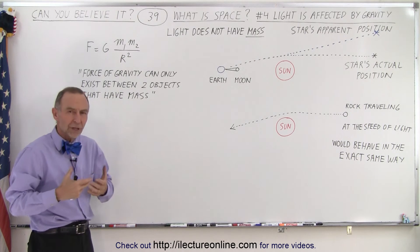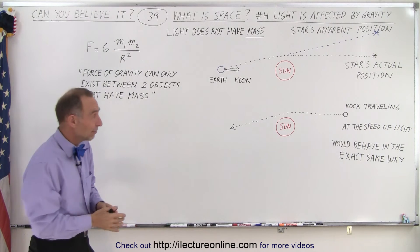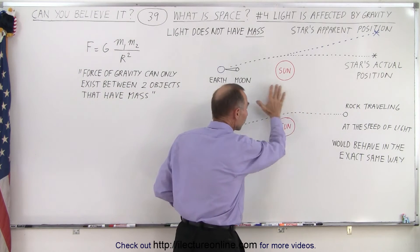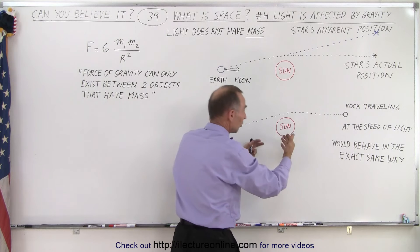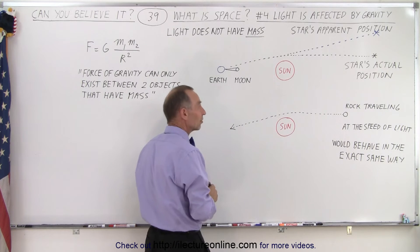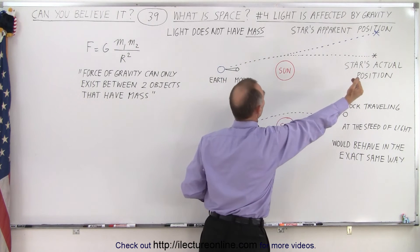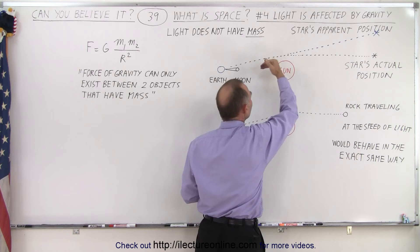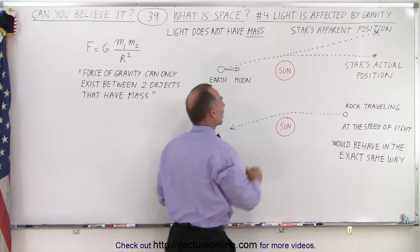But then again, what is gravity? Well, Einstein believed that gravity was a warping of space around any object, especially an object as big as the sun. And so any light that would travel through that region would be affected by that warp and therefore change direction.